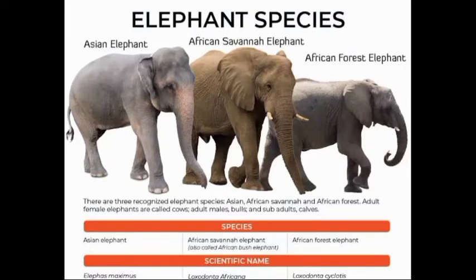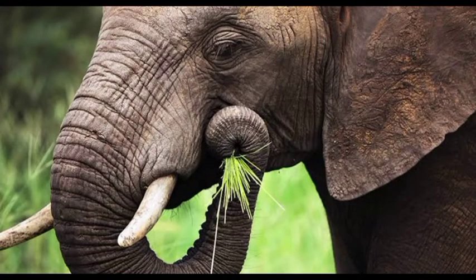Two genetically different African species exist: the savannah elephant and the forest elephant. The African savannah elephant is the largest, while the Asian and the African forest elephants are of smaller size.